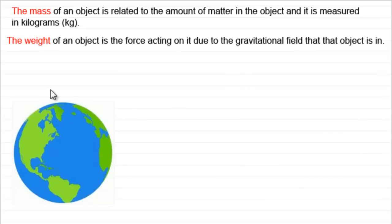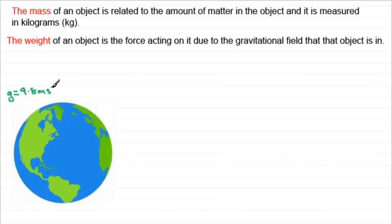If we take the earth and we take an object close to the surface of the earth, you would find that it would drop towards the earth with a constant acceleration. That constant acceleration, often called g, the acceleration due to gravity, turns out to be 9.8 meters per second per second. It acts towards the surface of the earth, and it generally is 9.8 meters per second per second wherever you are on the surface.